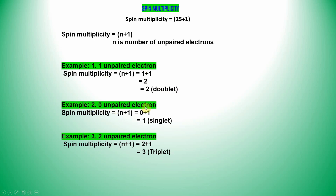For 0 unpaired electrons: N plus 1 equals 0 plus 1 equals 1. So if you have 0 unpaired electrons, write spin multiplicity 1, that means singlet. For 2 unpaired electrons: spin multiplicity equals N plus 1 equals 2 plus 1 equals 3, that is triplet. Likewise, if you have 3 electrons, add 3 plus 1 and you will get 4, which is quartet.